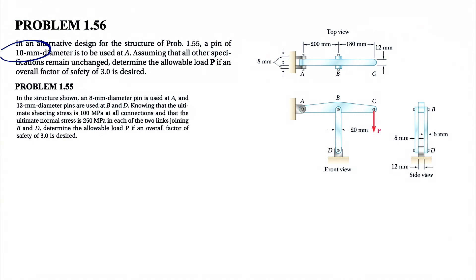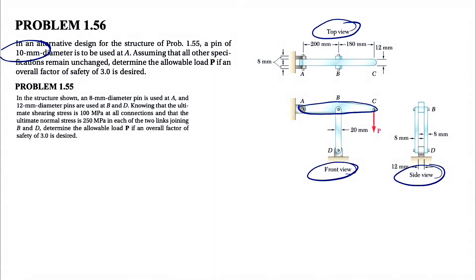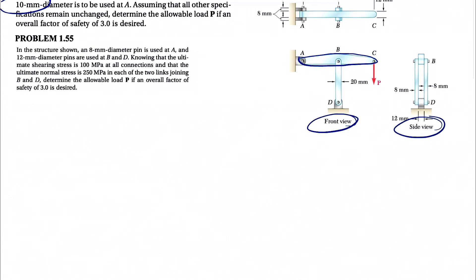We need to determine the allowable load P knowing that the overall factor of safety is three. We'll start with the free body diagram of this member. If you look at the figure, we can see three different views of the system: top, front, and side view. I'm going to draw the free body diagram for the ABC member.